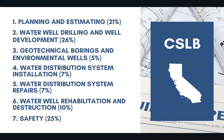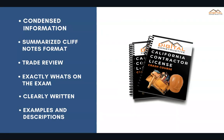The test is broken up into a few different parts. 21% of the exam covers planning and estimating. 26% covers water well drilling and well development. 5% covers geotechnical borings and environmental wells. 7% covers water well distribution system installation. Another 7% covers water distribution system repairs, water well rehabilitation and destruction, and safety at 25%.